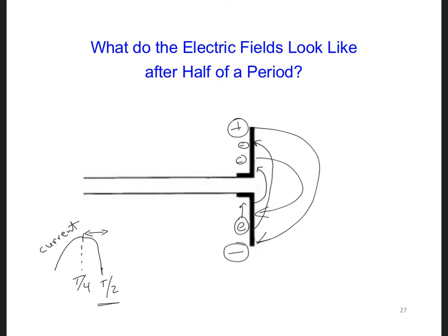Now right at T over 2, enough electrons have migrated back along the dipole so that the total charge on the antenna is back to zero, so no net charge. This is at time T over 2. So this means that there are no electric fields now extending between the upper and the lower half of the dipole anymore.